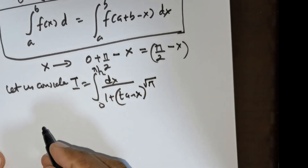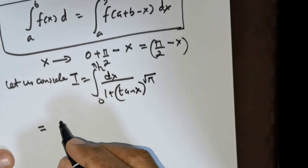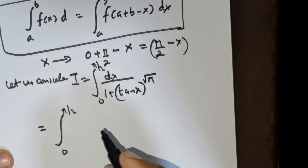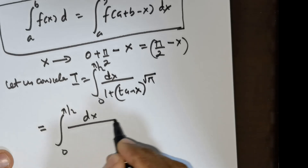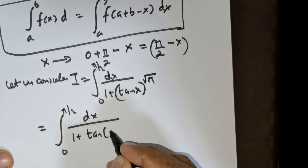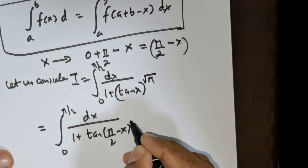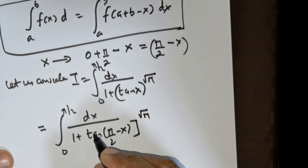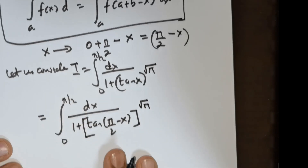Now if I apply the King's property, this is going to be equal to the integral from 0 to π/2 of dx divided by 1 + tan(π/2 − x) raised to the power of root of π. So this is what we have got.